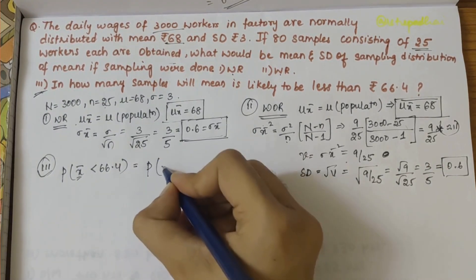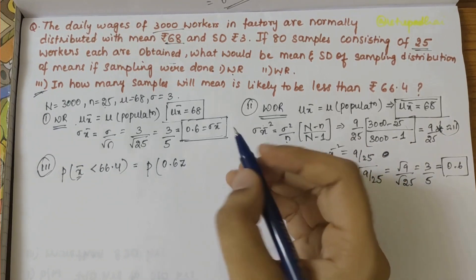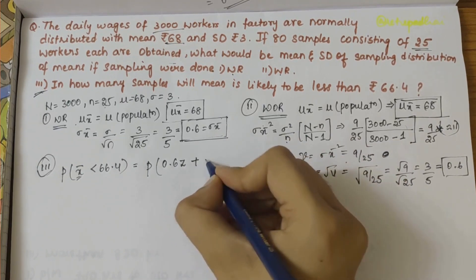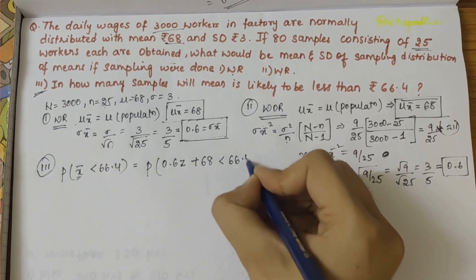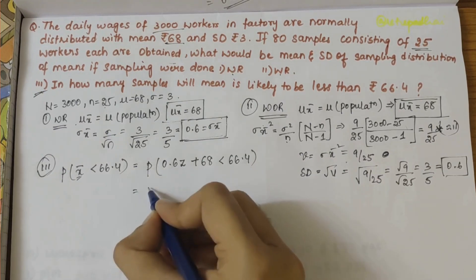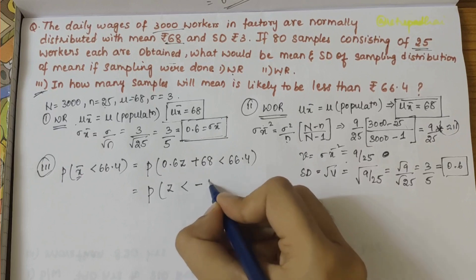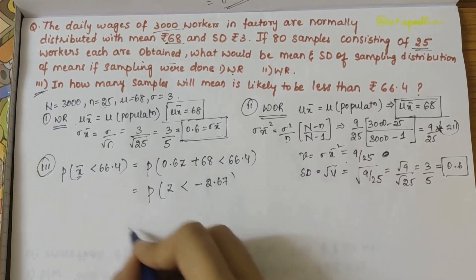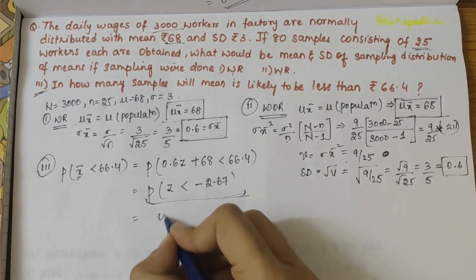We know that this can be written as P(0.6z + 68 < 66.4). Solving this further, P(z < -2.67), that is the normal distribution form.